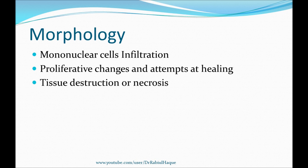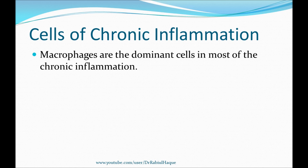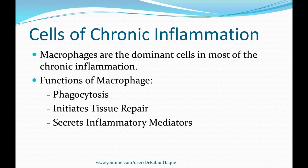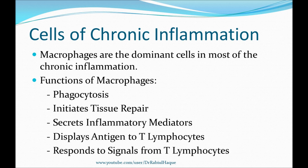The next topic is the different cells of chronic inflammation. Since macrophages are the major or dominant cells, we will begin with their roles. The functions of macrophages include phagocytosis, initiating the process of tissue repair, secreting inflammatory mediators, and displaying antigens to T lymphocytes and responding to signals from T lymphocytes. Among the mediators released from activated macrophages, tumor necrosis factor, interleukin-1, and chemokines are worth mentioning.